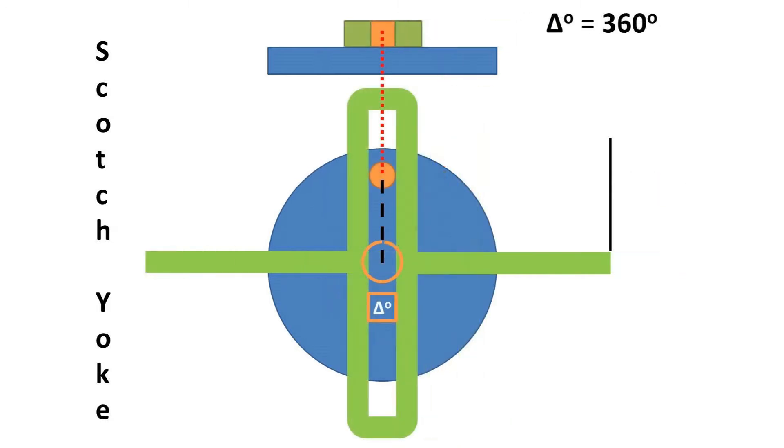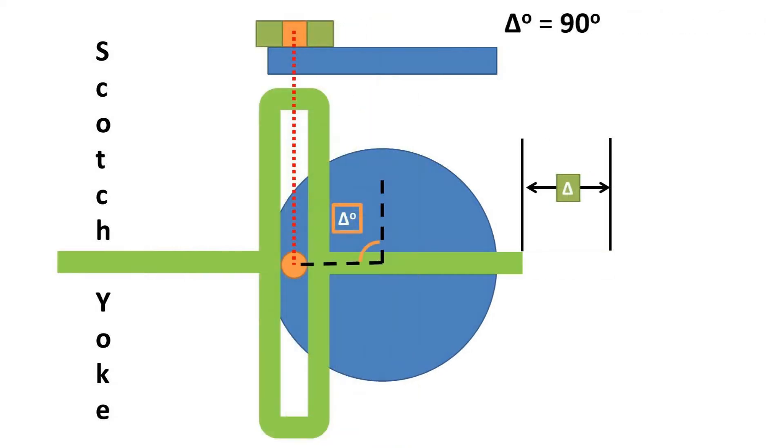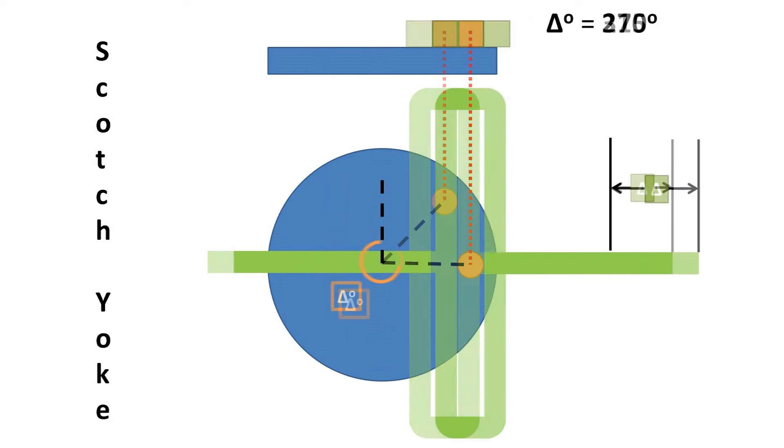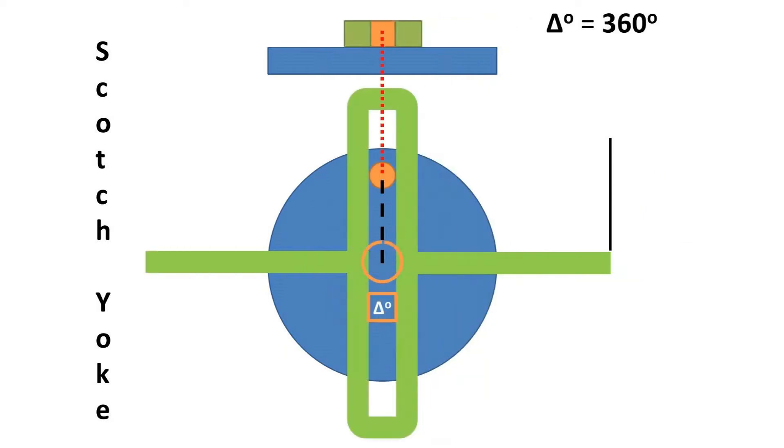This Scotch yoke consists of a rotating cylinder that has a peg that fits and moves in the yoke to turn the rotation motion to linear motion or linear motion into rotational motion.